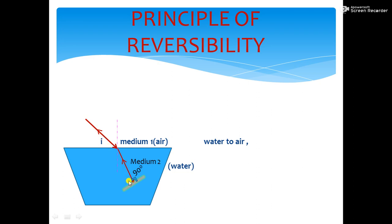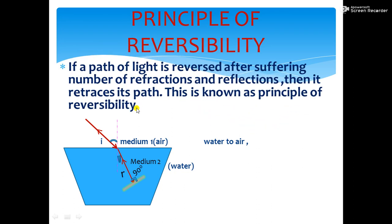This light ray reverses its direction because of refraction and reflection. Then, we can say that if a path of light is reversed after suffering number of refractions and reflections, then it retraces its path.